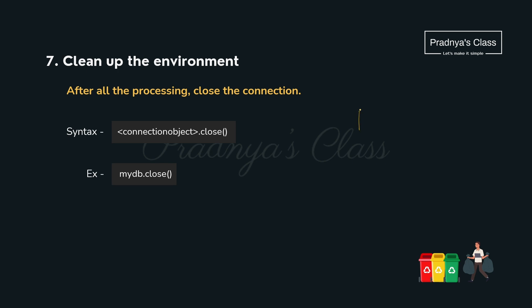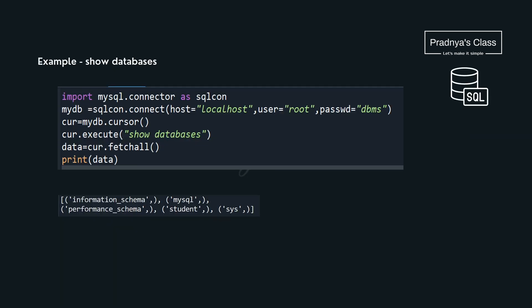When we establish the connection we also need to close it. For that we will be using the close function, which works with the connection object. Now let's try to write one program by assembling all the steps together.